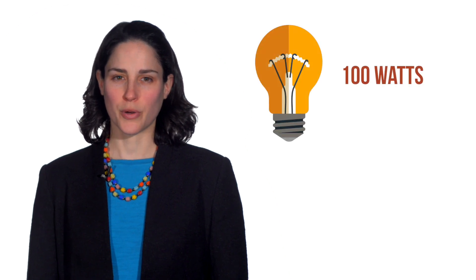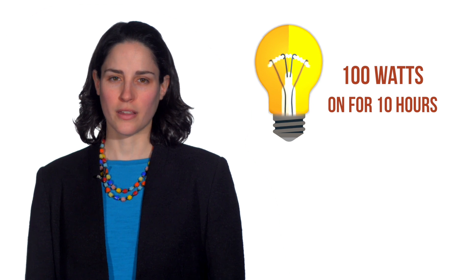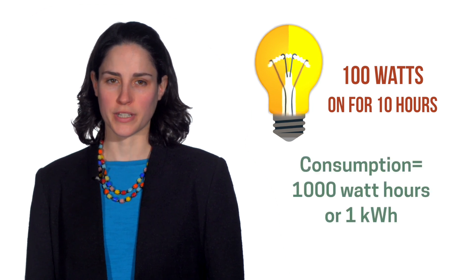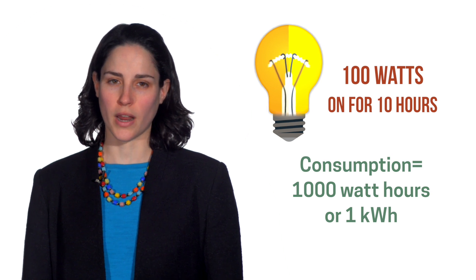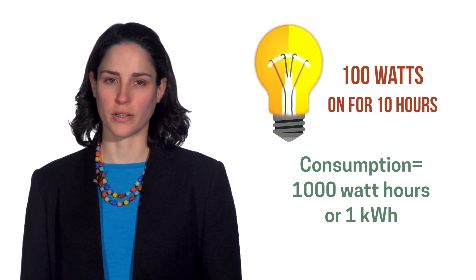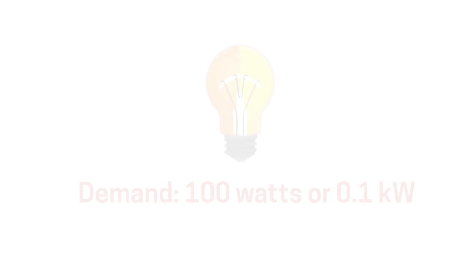Consider a single 100-watt light bulb. Suppose we turned this bulb on and kept it on for 10 continuous hours. That's 100 watts consumed for 10 hours. Our consumption in this case would be 1,000 watt hours or 1 kilowatt hour. When this single 100-watt light bulb is turned on, it will demand 100 watts or 0.1 kilowatts of power from the utility in order to function. No matter how long the light bulb is turned on, the bulb's demand remains constant.